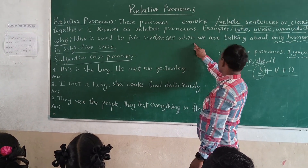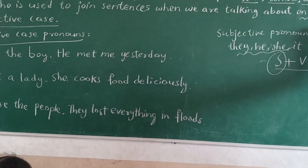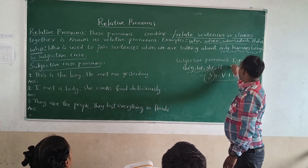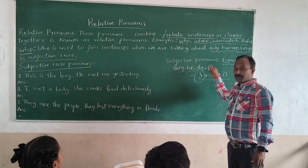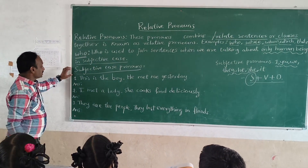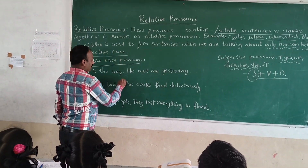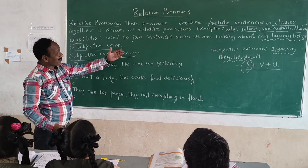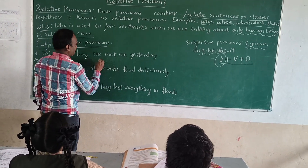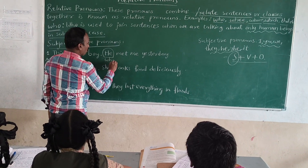Who is used to join sentences when we are talking about only human beings in subjective case. So when these pronouns are in subjective case, in the place of these pronouns, we are going to use 'who'. For example: 'This is the boy. He met me yesterday.' Here 'he' is a subjective pronoun, so we use who — 'He is the boy who met me yesterday.'